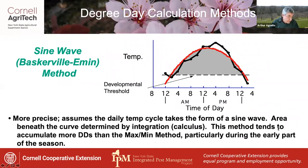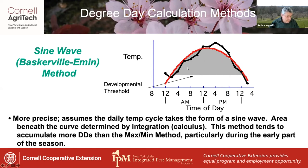The sine wave method, also called the Baskerville-Eman method, is a little more precise and assumes that the daily temperature cycle takes on the form of a sine wave. The area beneath the curve is determined by integration. This method tends to accumulate more degree days than the max-min method, particularly during the early part of the season.